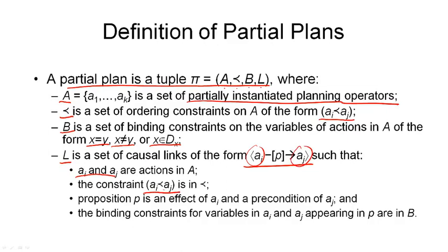Then, the proposition P must be an effect of AI, so it is produced by AI. And it is a precondition of AJ, which means AJ is consuming this proposition. That is why AI is called the producer in this causal link and AJ the consumer of this proposition. The proposition P is the protected proposition as we're not trying to interfere with this proposition before AJ can consume it.